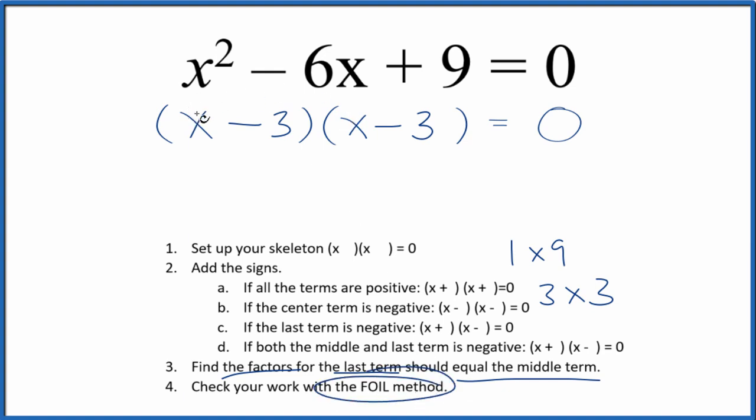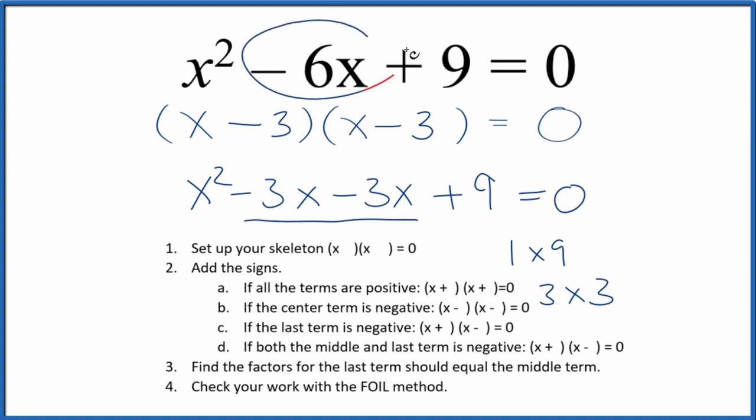We multiply the first, outside, inside, and then last terms. We end up with, and if we combine negative 3x and negative 3x, we'll get this negative 6x here. We have 9. We have x squared. Same thing we started with. So we've factored the equation correctly.